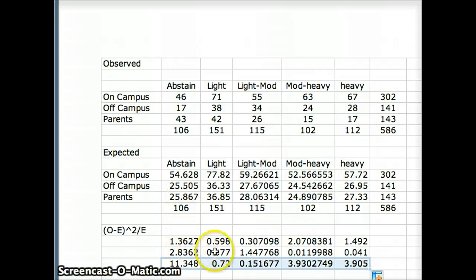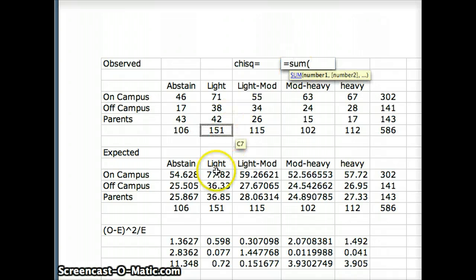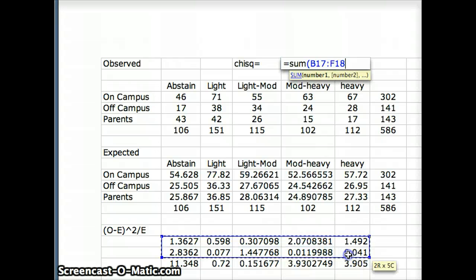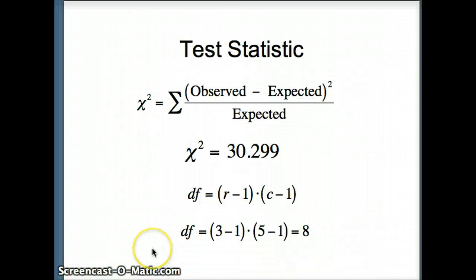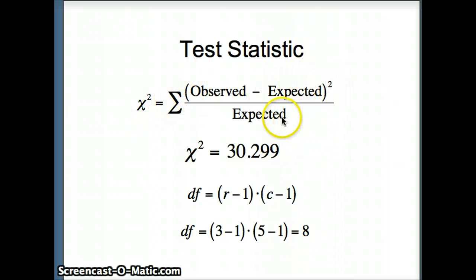Now we sum up all of those (O − E)² / E values to get our chi-square statistic. The chi-square statistic equals the sum of all observed minus expected squared over expected across the entire table, and that gives us 30.299.